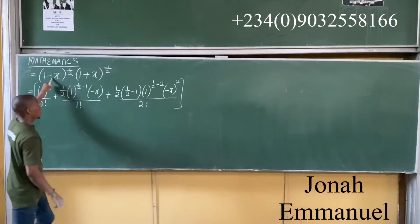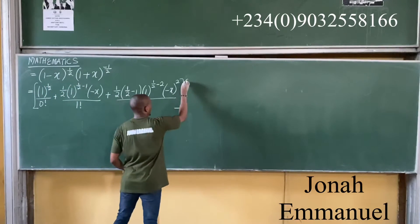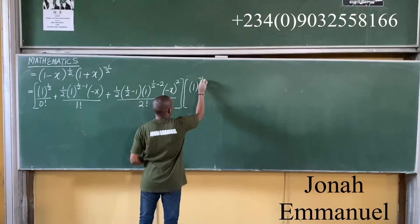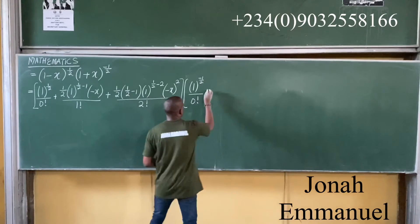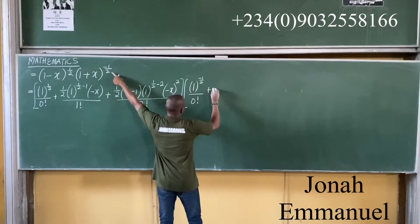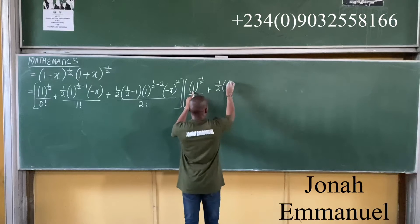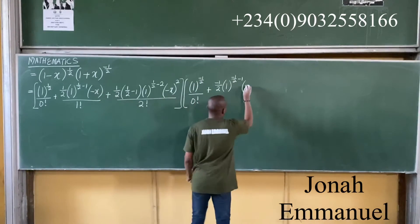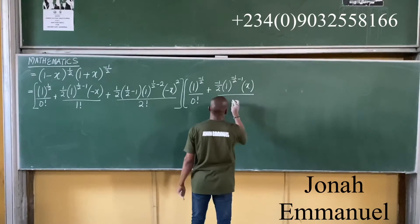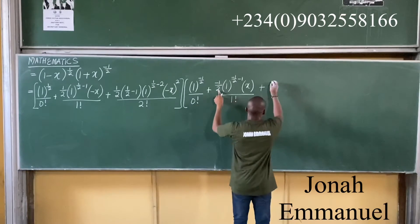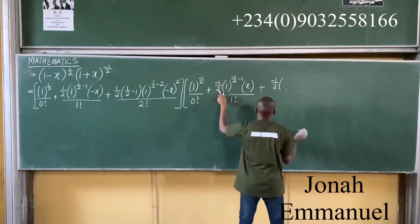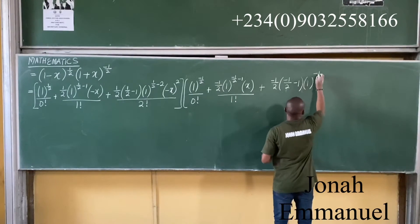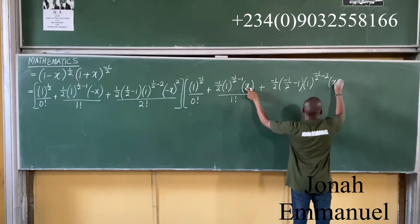This expansion is for the first bracket to the third term. Now for the second bracket — (1 plus x) to the power minus 1 over 2 — this gives: 1 to the power n, then plus n which is minus 1 over 2, all over 0 factorial, plus n times minus 1 over 2 times a times (n minus 1 over 2 minus 1), then b which is plus x, all over 1 factorial, plus n times minus 1 over 2 times (n minus 1 over 2 minus 1) times a to the power (n minus 1 over 2), then b squared giving x squared, all over 2 factorial.